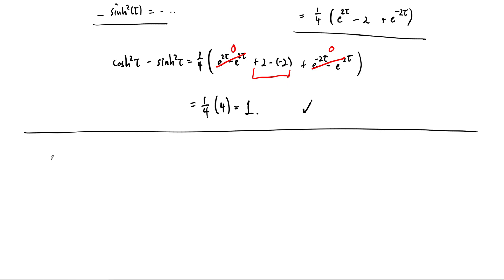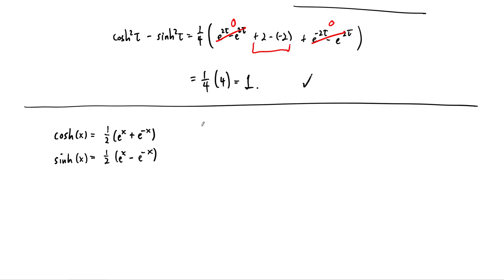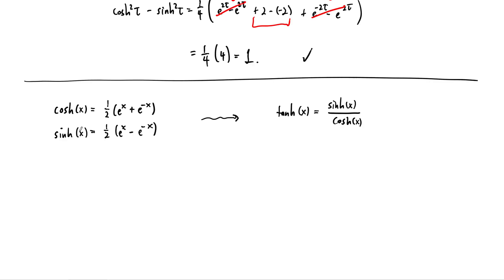So swapping tau for x since we'll do calculus: cosh of x equals one-half times e to the x plus e to the minus x, and sinh of x equals one-half times e to the x minus e to the minus x. From there you can build all the other hyperbolic trig functions just like regular trig. For example, tanh of x, which we will use all the time, is sinh of x divided by cosh of x. Usually we'll stick with these three.